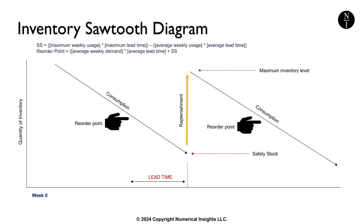The vertical spike upward that you see is replenishment or restocking, which brings the inventory back to a higher level. An example of this would be receiving a supplier delivery into your system.